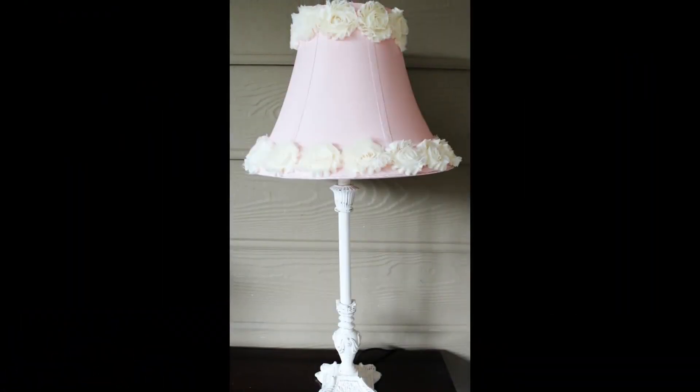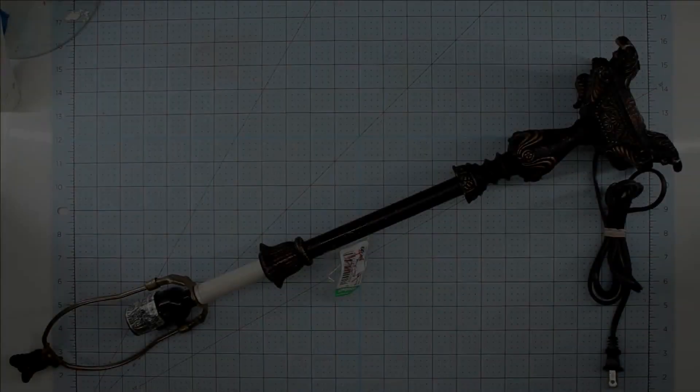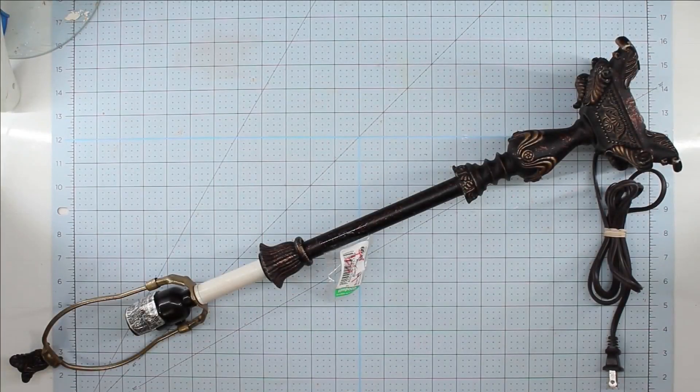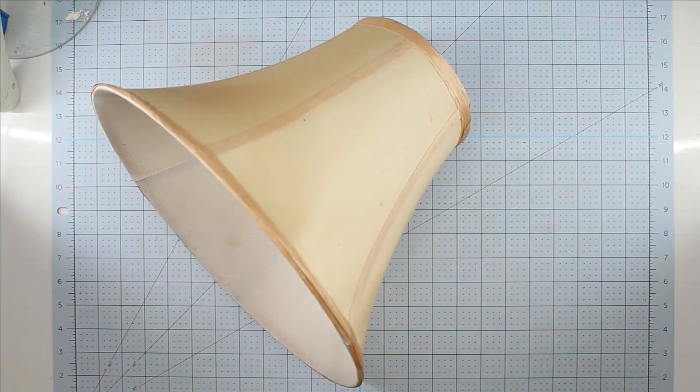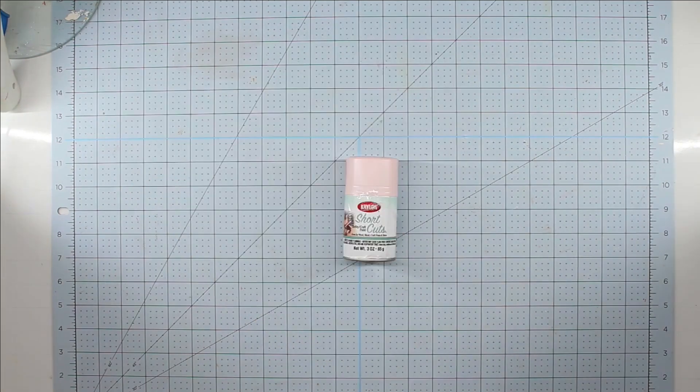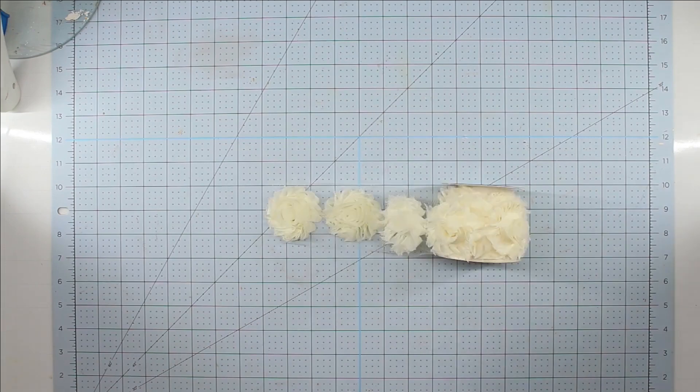Hey y'all, it's Trish. For this project I'm going to use this lamp that I found at Goodwill Outlet for a dollar forty-nine. Just look at all that beautiful detail work. This lampshade I got from Goodwill Outlet for ninety-nine cents, some Krylon spray paint in rose petal pink, some Waverly chalk paint in ivory.